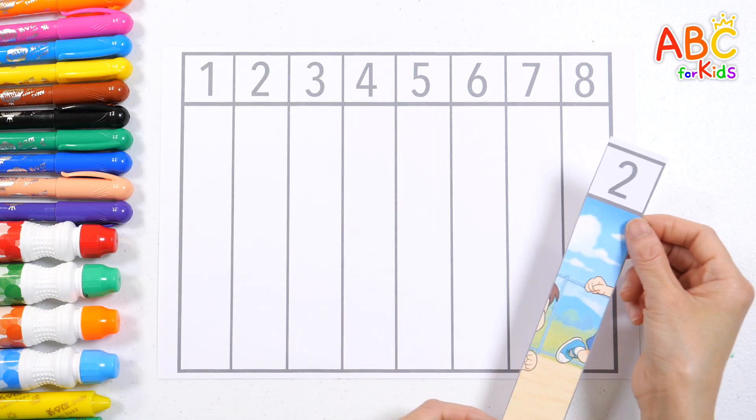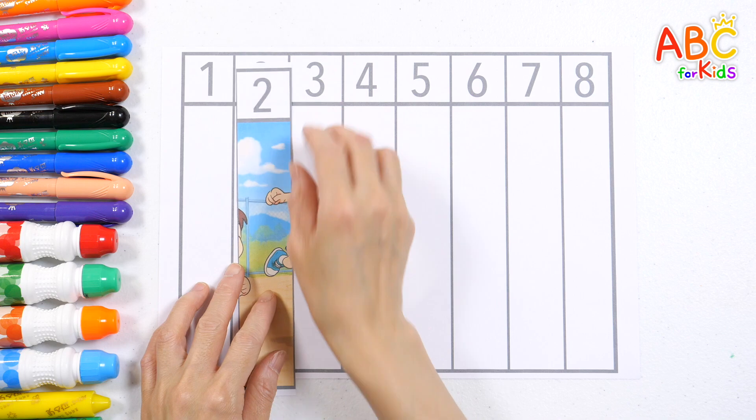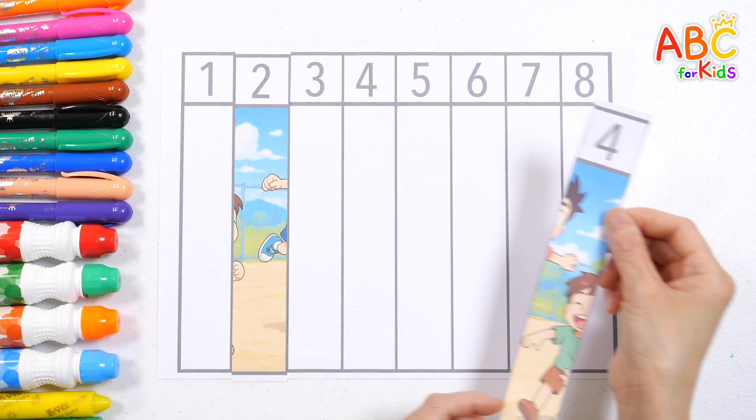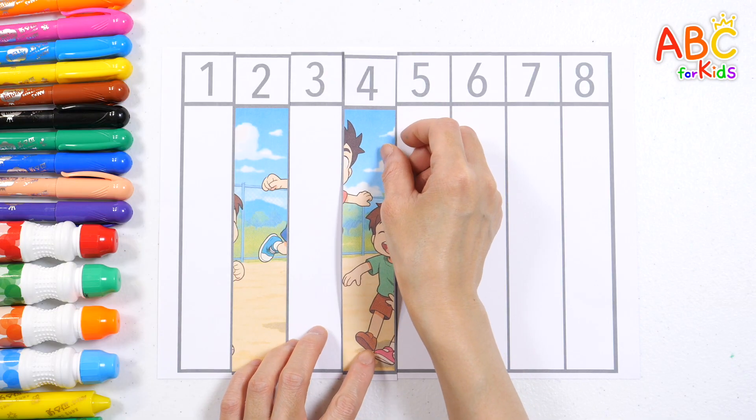There are numbers written on the picture pieces. Shall we put each picture piece in the empty space that has the same number? Four.